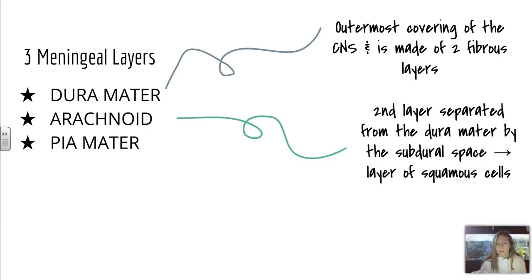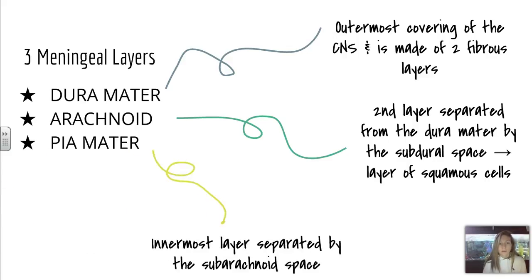The arachnoid is a second layer separated from the dura mater by the subdural space, and it's a layer of squamous cells. Remember 'arachnid' means spider, and so there are lots of interwoven vessels and things like that in this layer. And then finally, the pia mater is the innermost layer, which is separated by the subarachnoid space. Remember 'pia' means delicate, so this is the delicate inner layer of the meningeal layers of the brain and spinal cord.